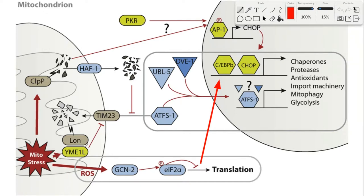Mitochondrial permeability transition pores, or MPTPs, are voltage-gated channels that open following depolarization, and they release various cytotoxic proteins like cytochrome C as well as calcium, which potentially causes excitotoxicity. I'm not going to focus on MPTPs in this lecture since I have a lecture on calcium dynamics that covers it. Instead, I'm going to focus on how mitochondrial import inhibition triggers the MT-UPR and mitophagy.